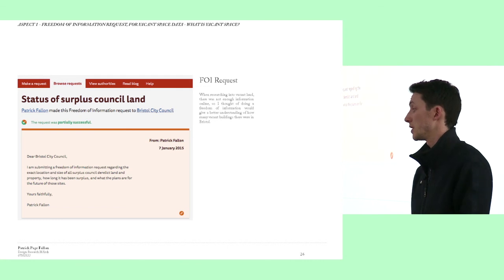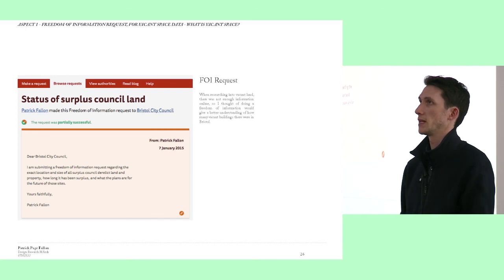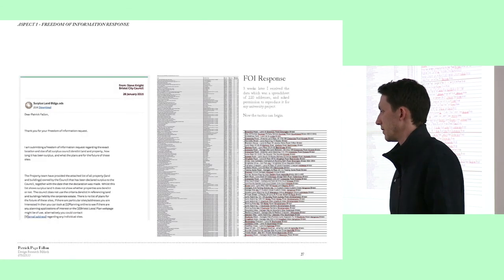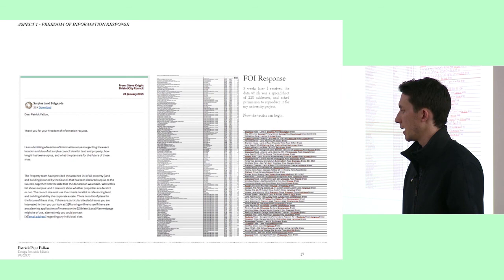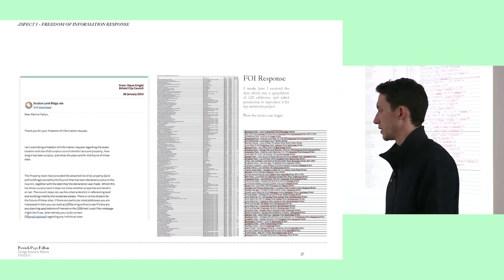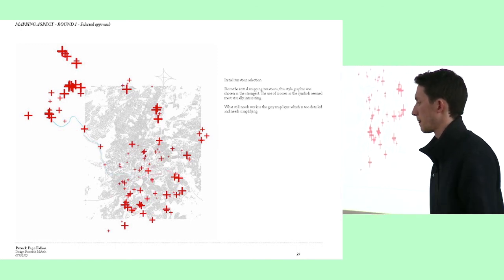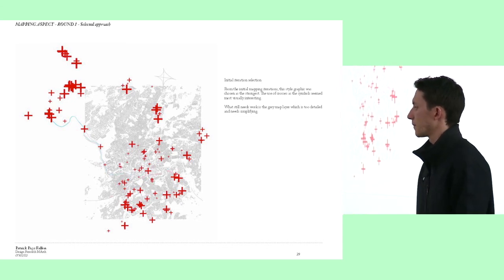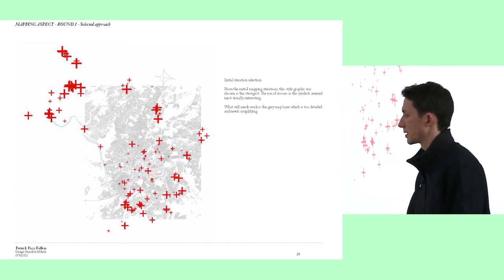I did a freedom of information request to the council asking: where are all the empty buildings, how long have they been derelict, and how big are they? I used that as a design tool to inform the project. They sent me back a spreadsheet of all the empty buildings, and I then plotted that using ArcGIS. You can see the different crosses and locations in Bristol — this was 2015, two years ago — and there were 200 sites at that time.